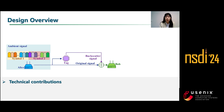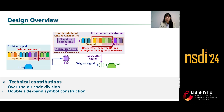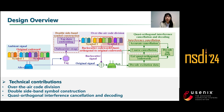Solving these challenges, we design O-Scatter, which makes the following technical contributions. First, we design the over-the-air co-division scheme that embeds tag data over quasi-orthogonal backscatter cohorts. Second, we design the double sideband symbol construction scheme that generates such backscatter cohorts while keeping power consumption similar to existing works. Finally, to cope with interference from the original signal, we design the quasi-orthogonal interference cancellation and decoding scheme, which utilizes the quasi-orthogonal cohorts to conduct accurate interference cancellation before decoding the tag data.